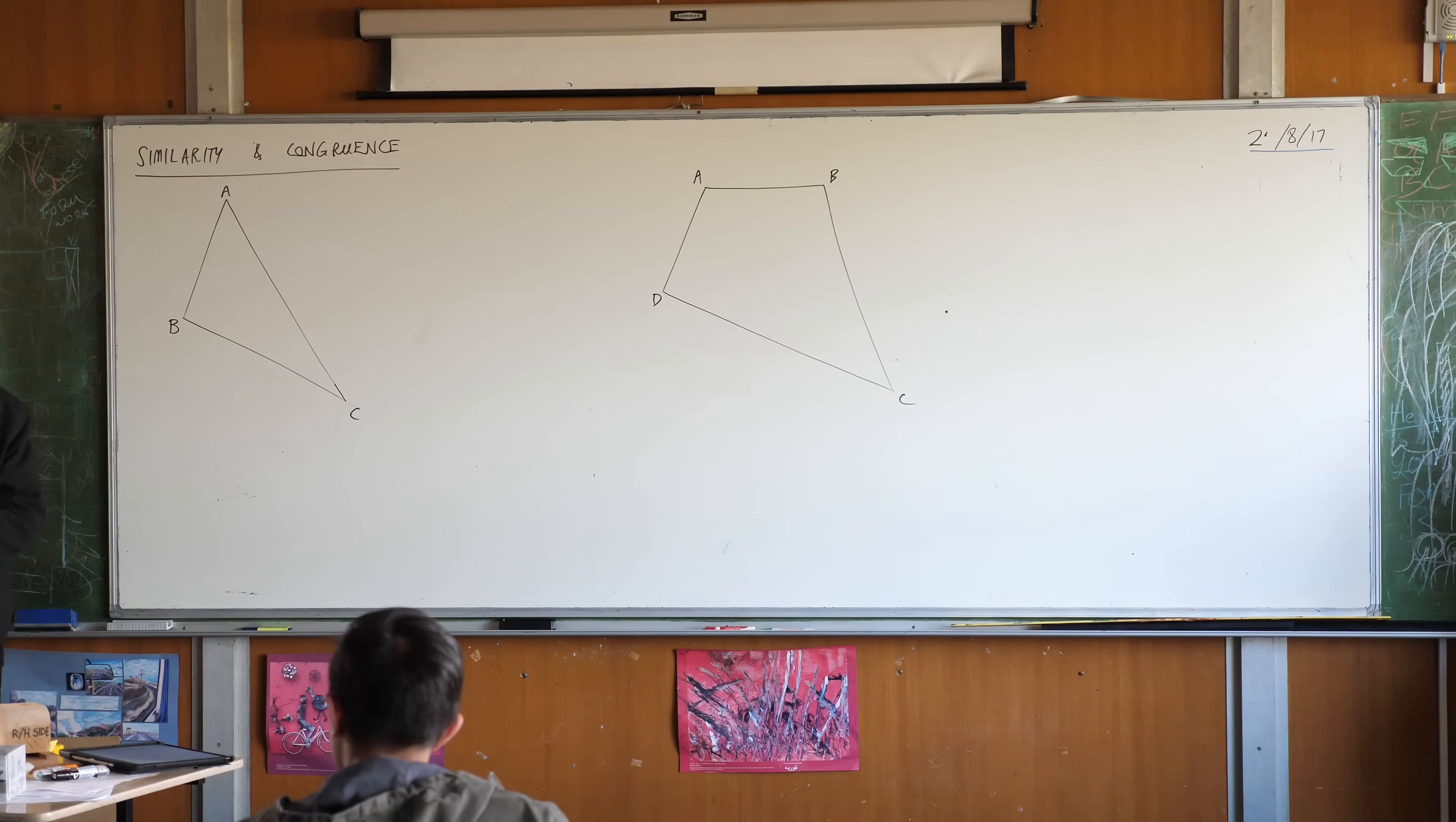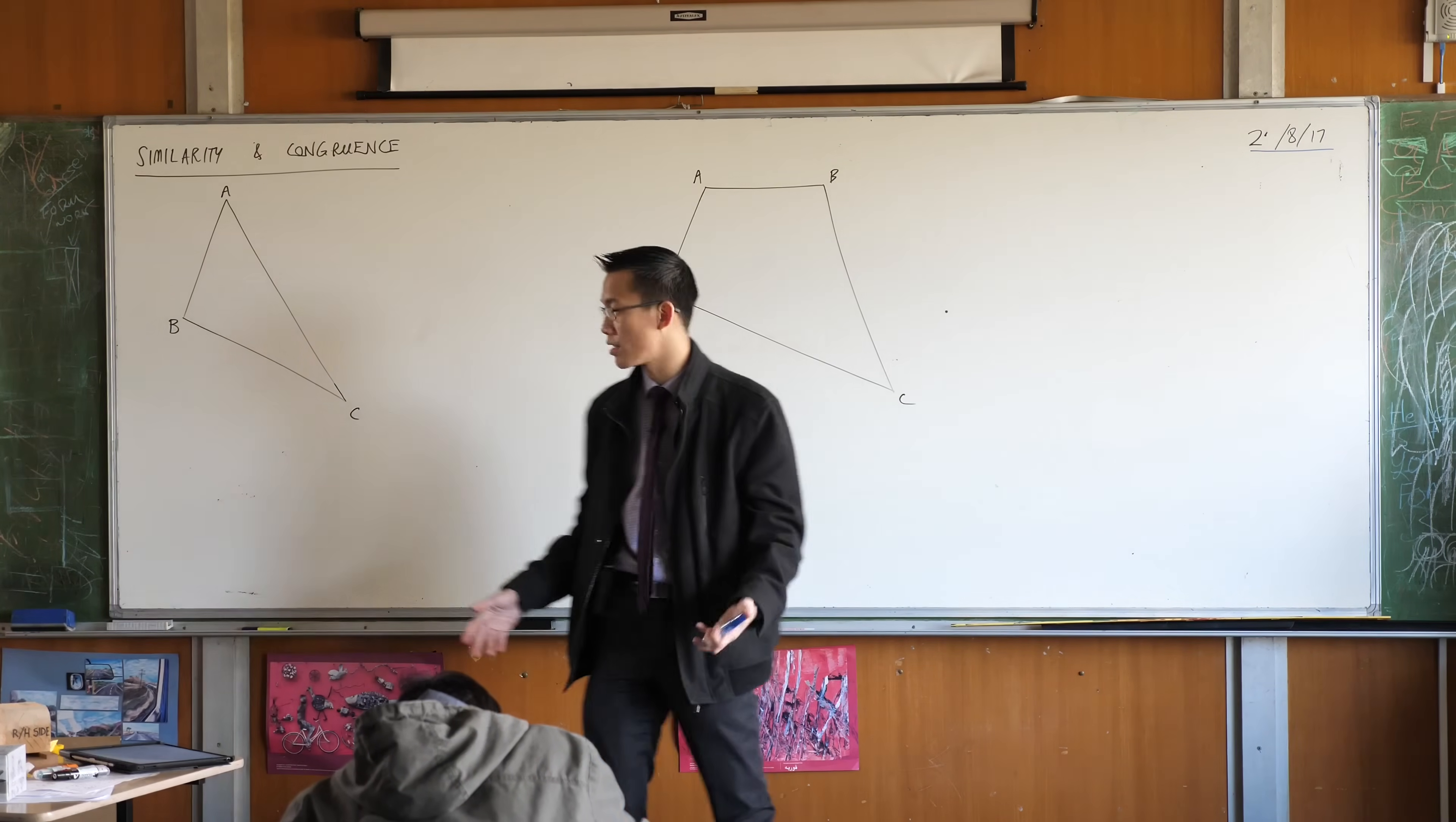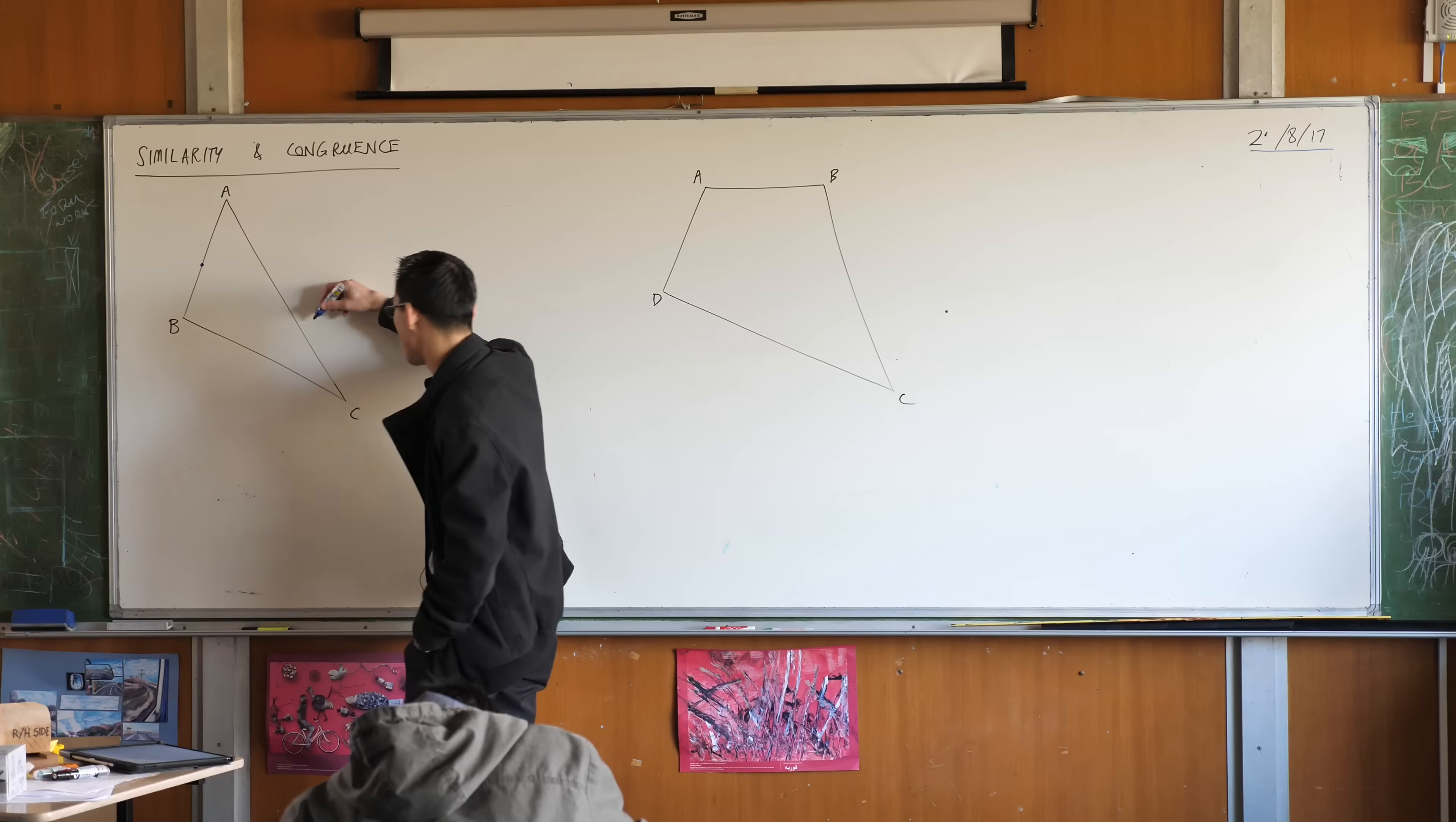So for starters with your ruler I want you to go ahead and measure these two sides so that you can find the midpoints of those two sides. So AB and AC. I will point out you could do this with any two sides that you like, but let's try and do it with the same pair so that we all are looking at something reasonably similar. Go ahead and find those midpoints.